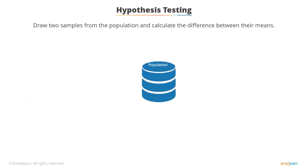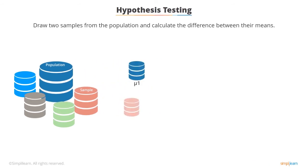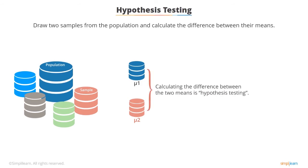Population is a large data set and samples are a part of it. A sample drawn from a population should have all the main attributes or features which represent the characteristics of the population. An ideal sample can be treated as the population itself, and the hypothesis outcome for a sample would hold true for the entire population. In the example shown here, two samples are drawn from the population of a large data set. Each sample has a mean, and the process of calculating the difference between the means is known as hypothesis testing.